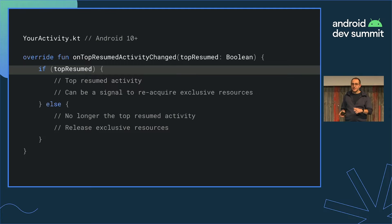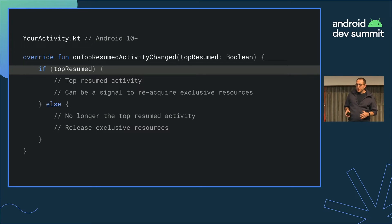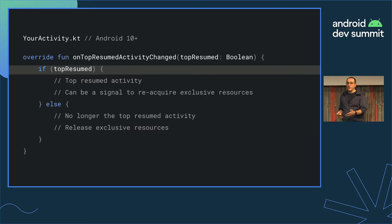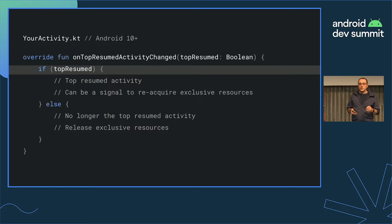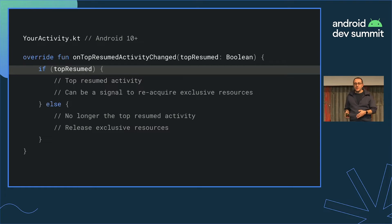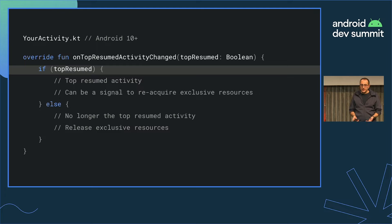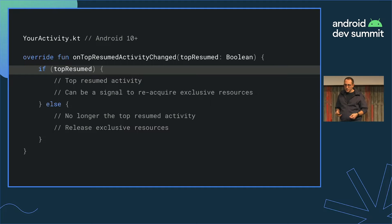Let's see that in code. onTopResumedActivityChanged is a method in your activity that you can override, and this flag will tell you if you are the topmost activity. If you are the topmost activity, you will attempt to acquire new resources, and if you're not, you should release your resources, because that means the user is not interacting with your app anymore.